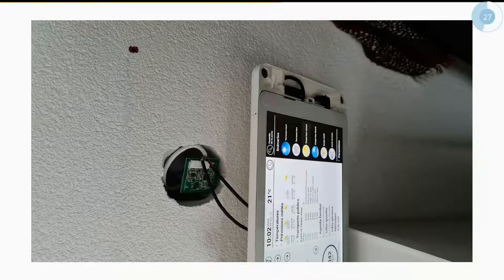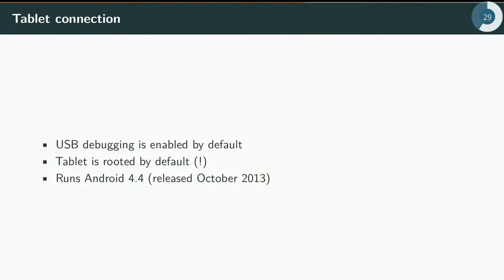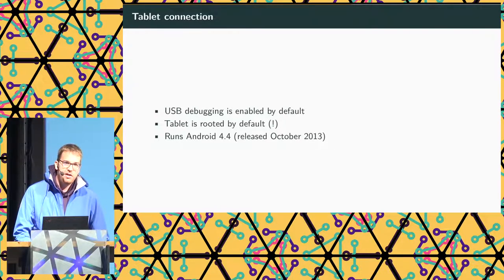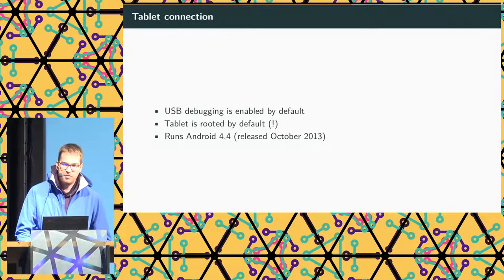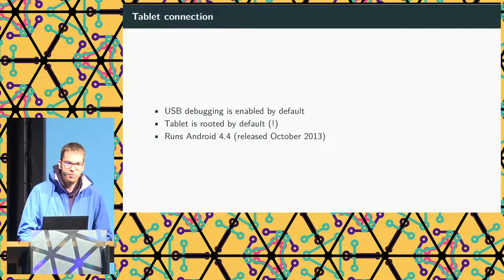Behind the tablet there was a hole in the wall containing a chip with an Ethernet cable — that's where the tablet gets its network connection. Using the USB cable, we immediately saw that USB debugging was enabled on the tablet by default. We could use ADB to connect, and just doing ADB shell, we found that we are root on the tablet. These devices are delivered rooted with USB debugging enabled, and the tablet runs Android 4.4, which is pretty old.